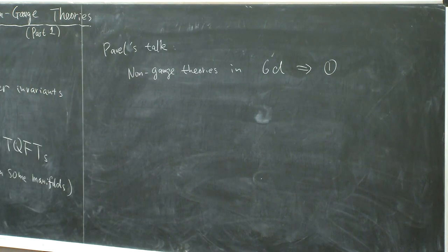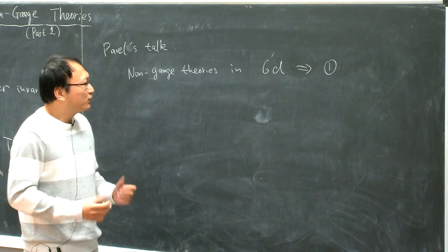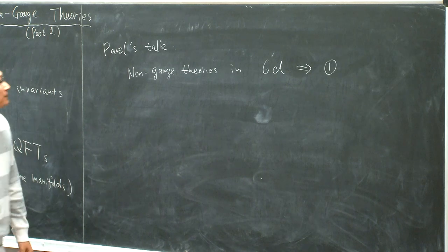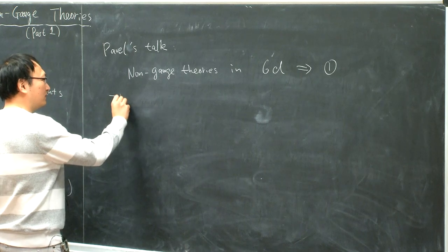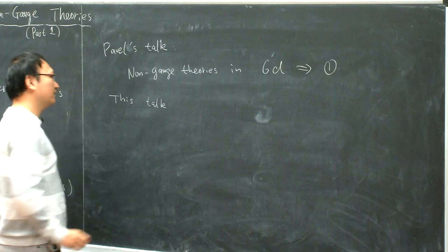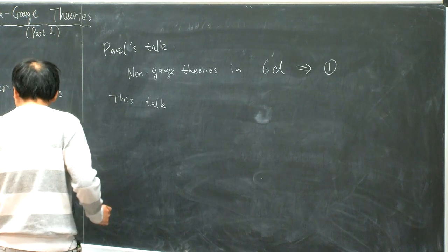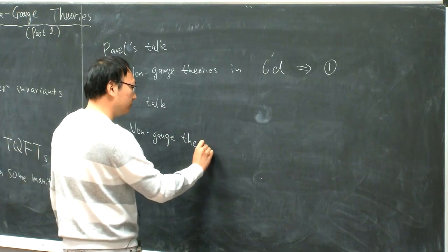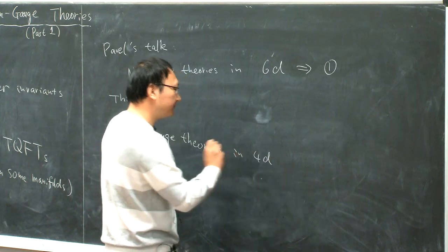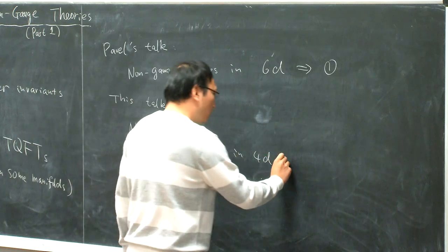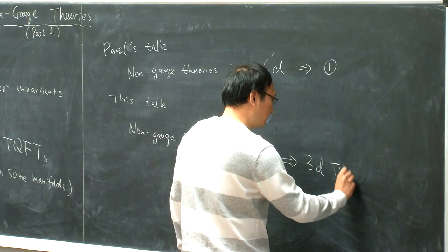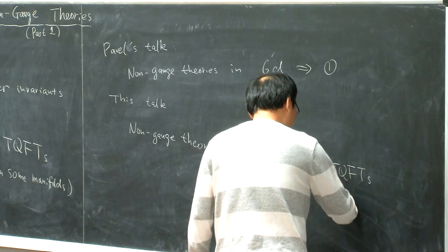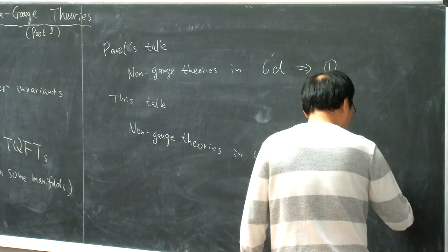For today, they are not exactly stronger than Seiberg-Witten invariants. But since they have this structure, we expect that if we use more complicated theories, one has a good hope of getting something actually stronger. For this talk and the next one tomorrow morning, the goal is instead to try to cure the second problem. We'll be using non-gauge theory in four dimensions, and the goal is to get some 3D TQFTs that are actually TQFTs — well-defined, or expected to be well-defined, on all three-manifolds.